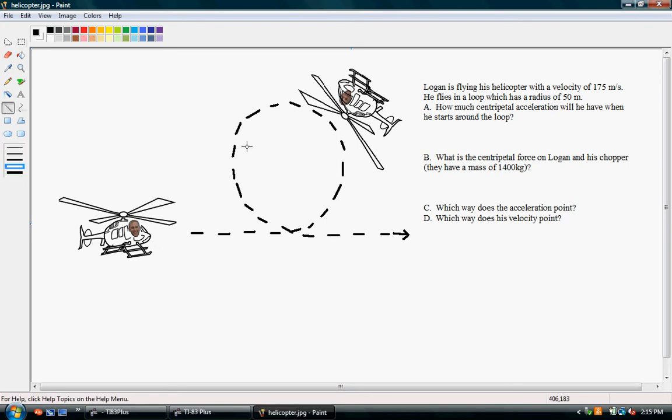So, we know that this radius right here is 50 meters. Okay, and it asks, how much centripetal acceleration will he have when he starts around the loop? Well, the radius is 50 meters, and he's moving with a velocity of 175 meters per second.